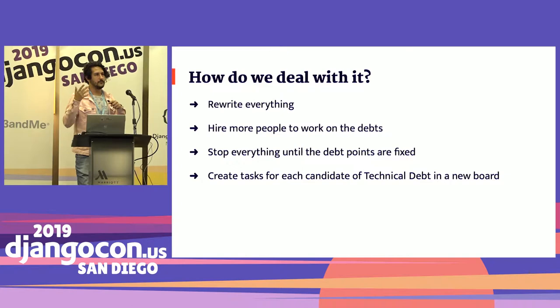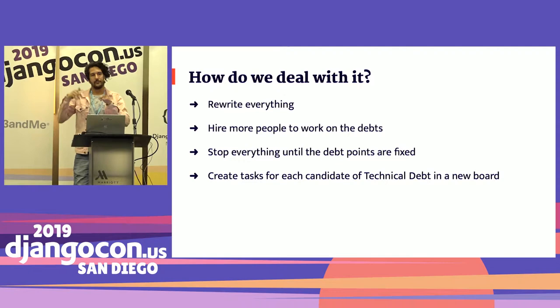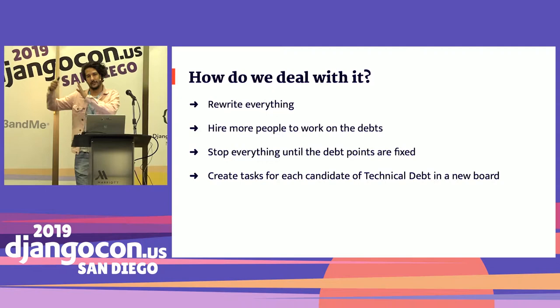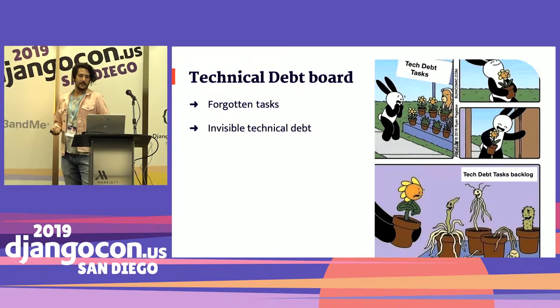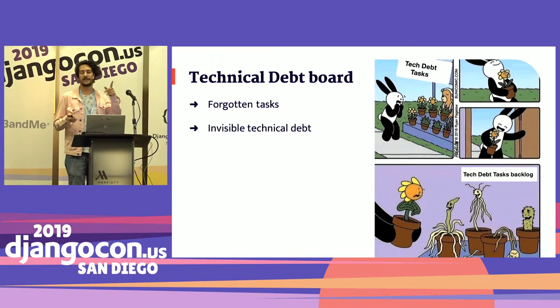But we can emerge a new problem: if we have these moments of stopping everything and cleaning, it's not sustainable. Imagine spending four months working and then stopping one month to fix two technical debts and some architectural problems — after four months you need to stop again. Also, if we just create a new board on our Jira or Pivotal for technical debt issues, after some time it may get invisible to the team. Your day-to-day backlog is already overwhelming — imagine one that's separate from the main one. So that's not a great idea.